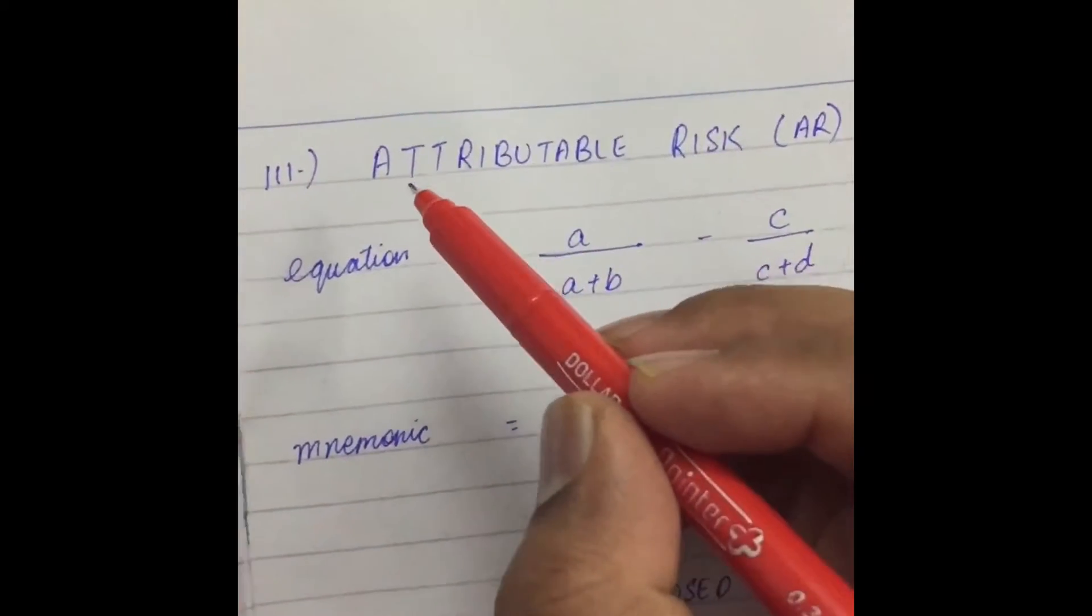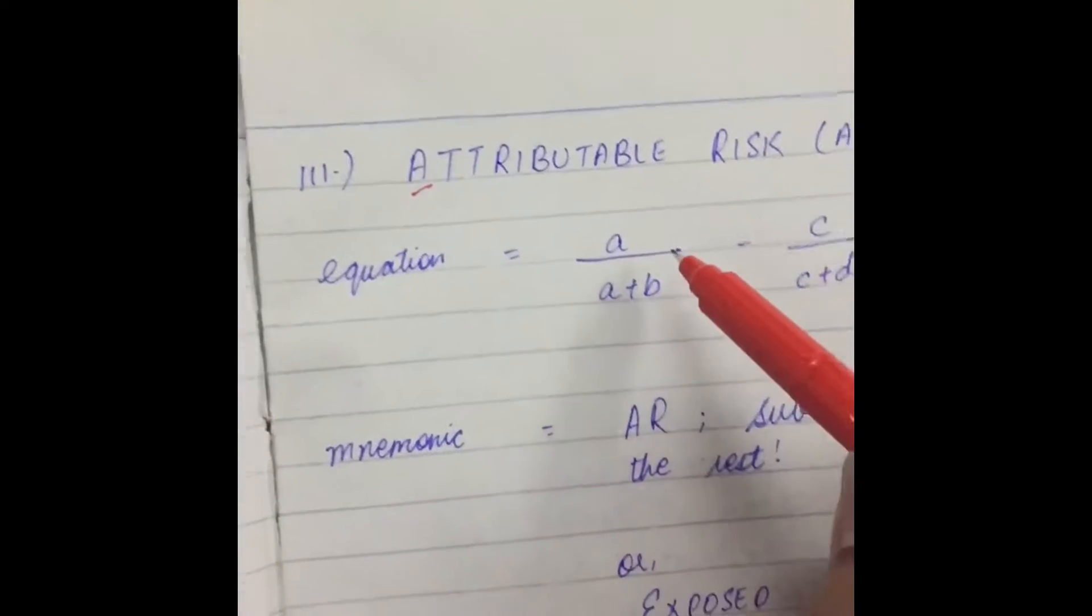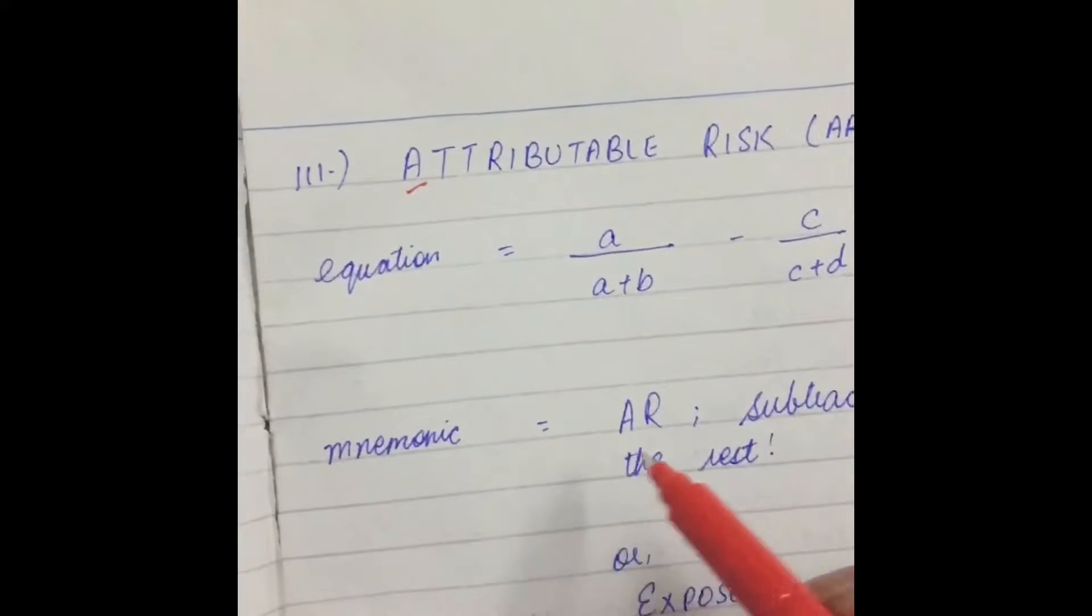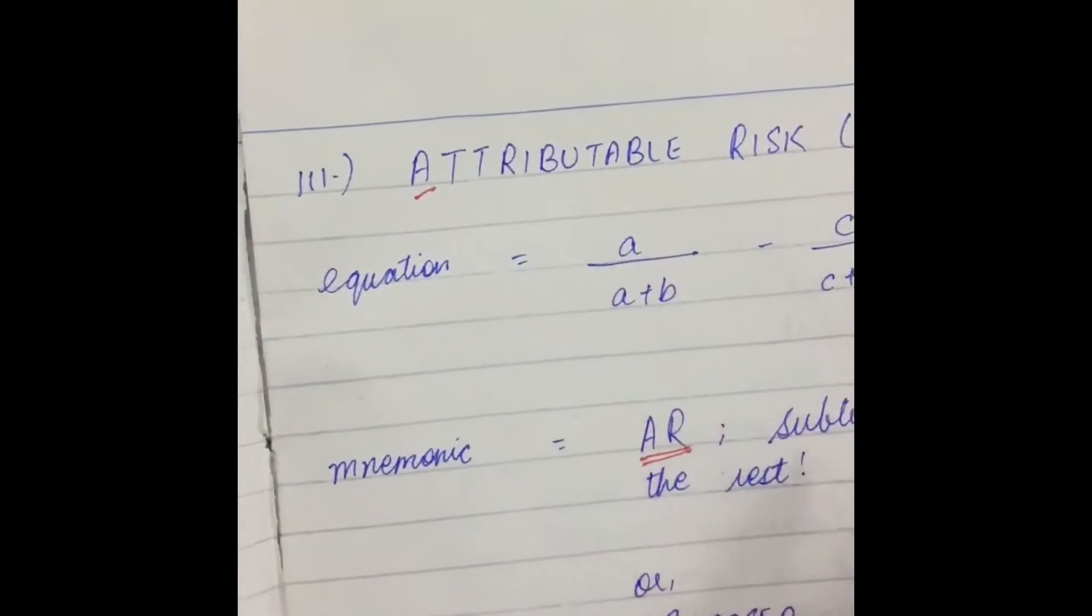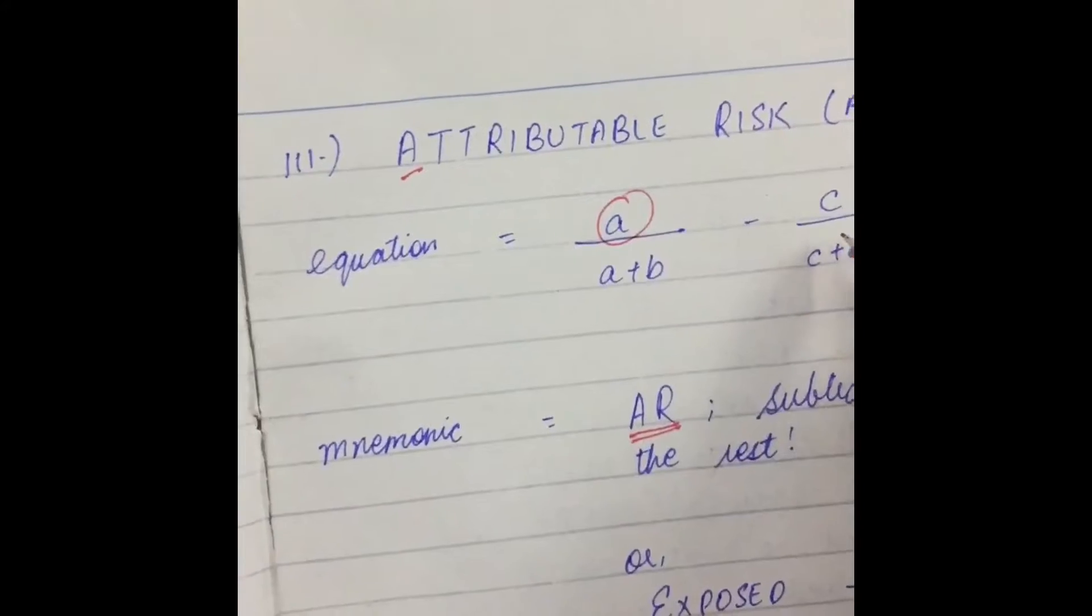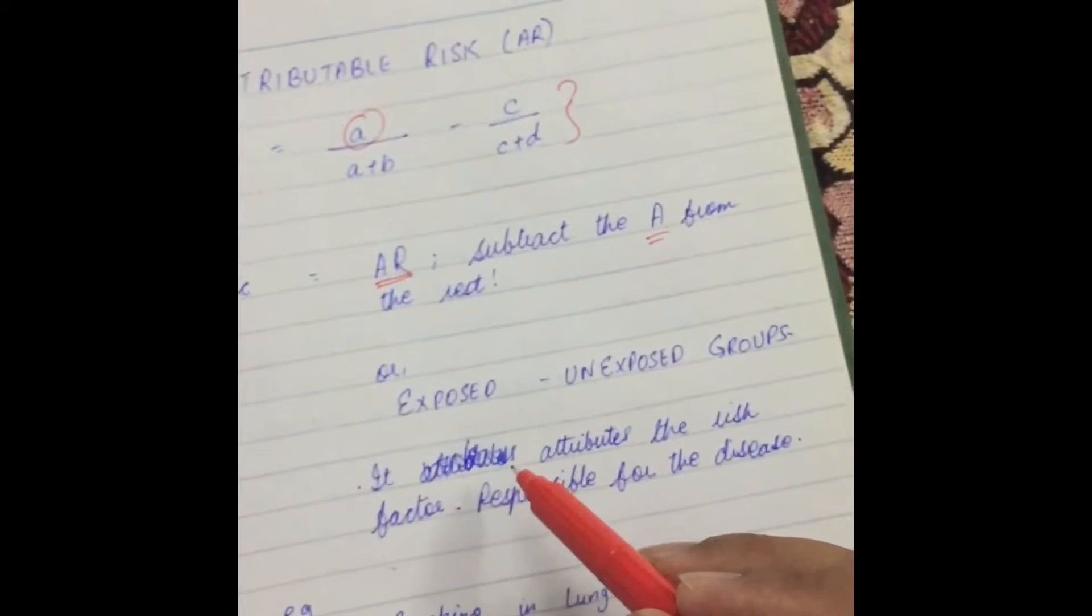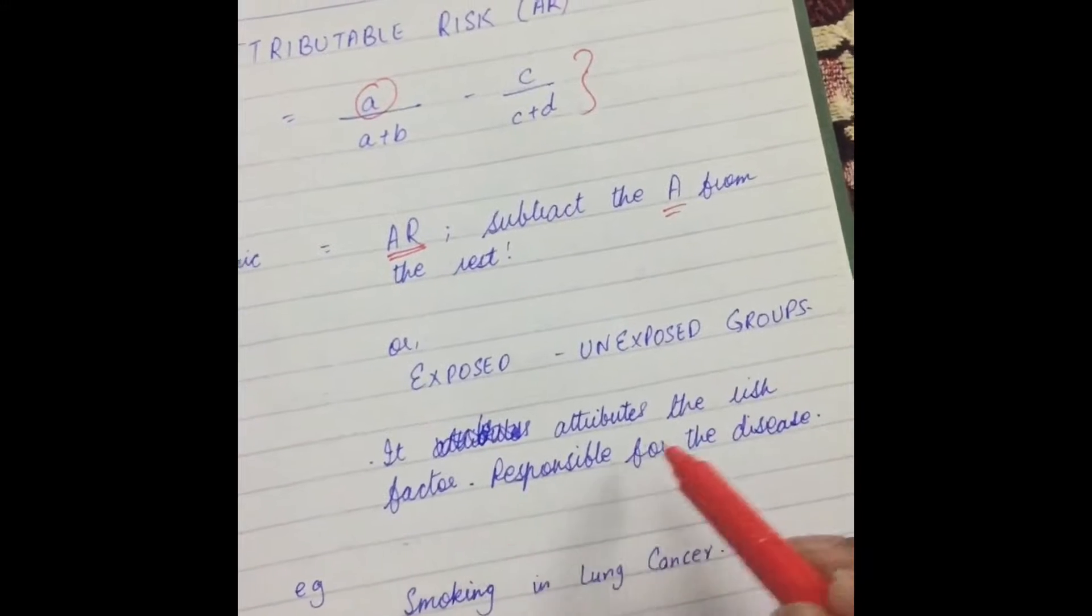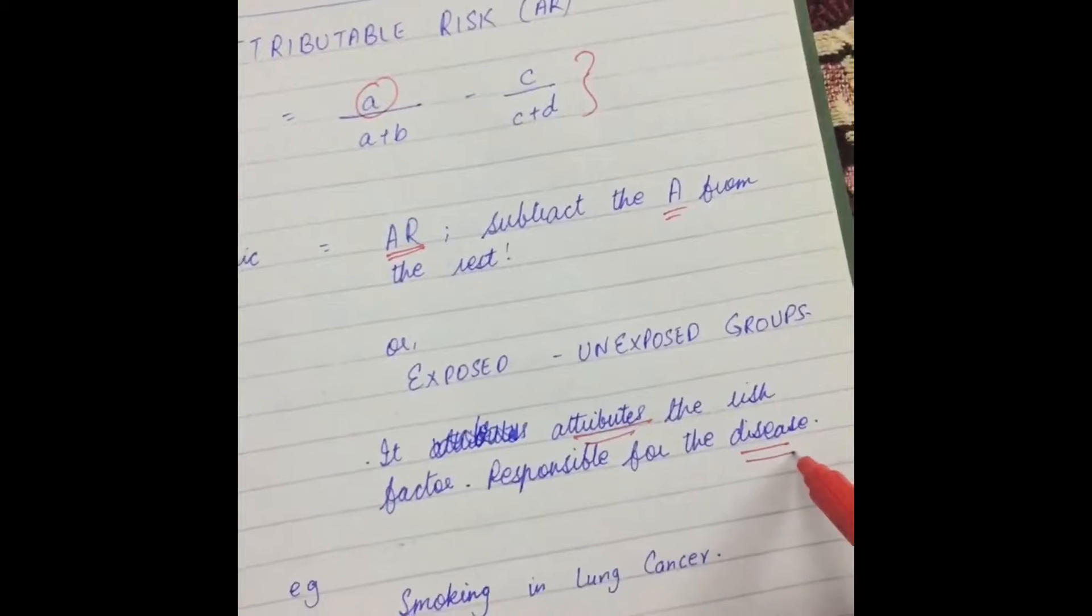The attributable risk. We're going to subtract A from the rest. Its equation is A, or A plus B, minus C, or C plus D. Subtract the A from the rest, or technically it means exposed subtracted from the unexposed group.